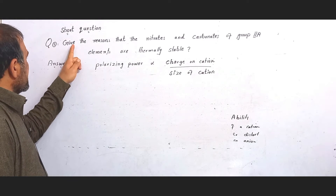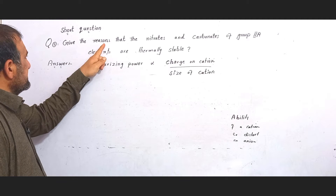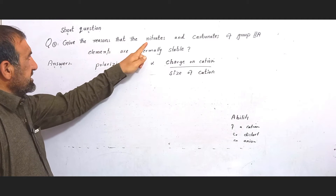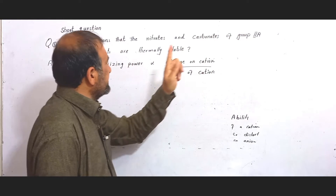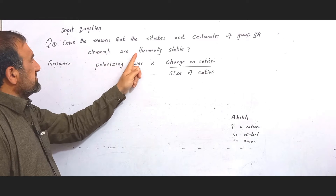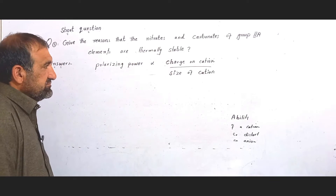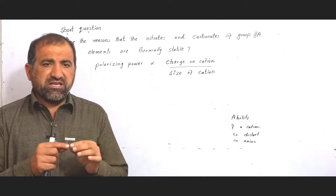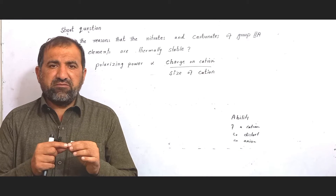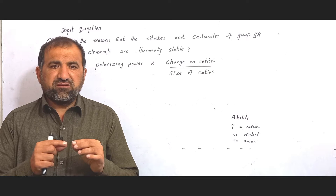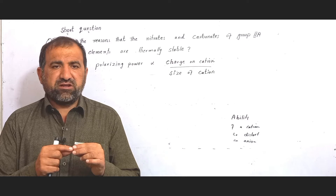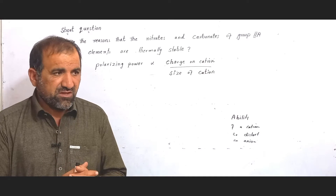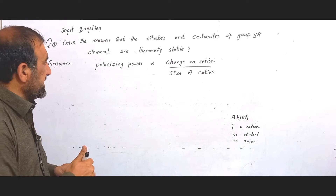The short question asks: give the reasons that the nitrates and carbonates of Group 2A elements are thermally stable. The question is about why second group A elements' nitrates and carbonates are thermally stable.